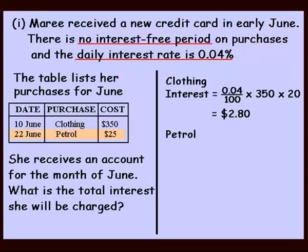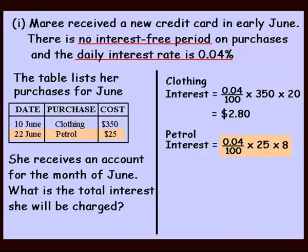Now what about petrol? Let's calculate that interest. It's 0.04%, written as 0.04 over 100, times by the petrol price of $25. That's her daily interest on the petrol. She bought it on the 22nd of June, so she only had 8 days remaining in June to make up 30 days. So we multiply our interest by 8, and it comes out to be only 8 cents. You'll find, unfortunately, with credit cards, all these interest charges add up. So altogether: $2.80 for clothing and 8 cents for petrol — her total interest for June is $2.88.